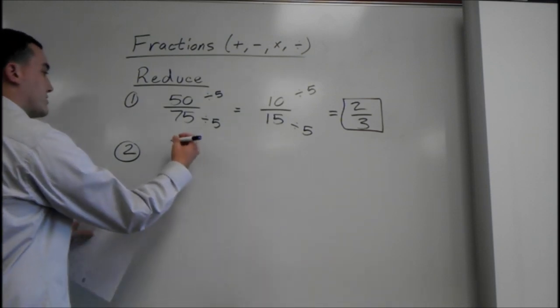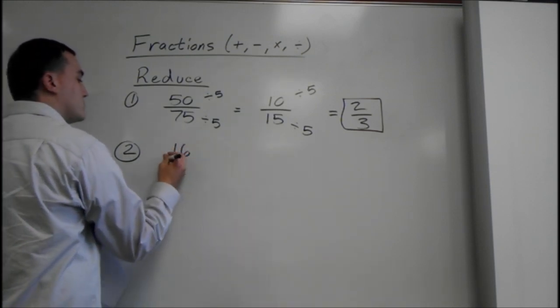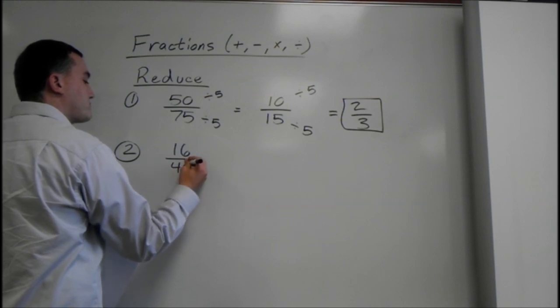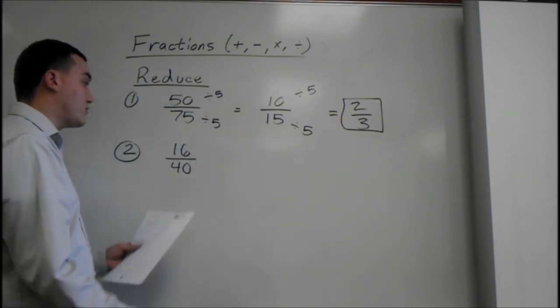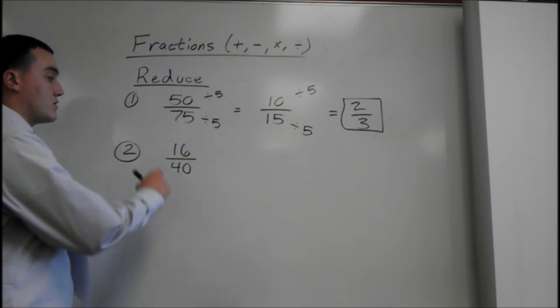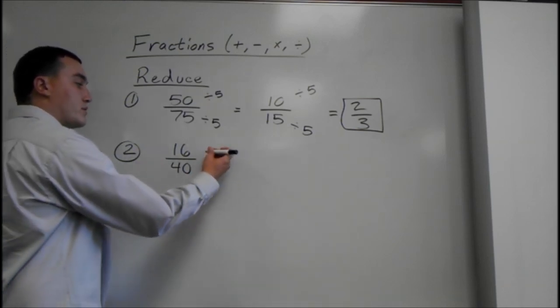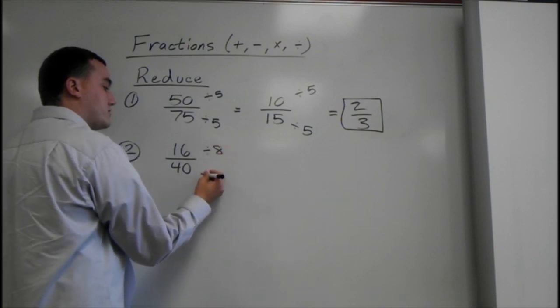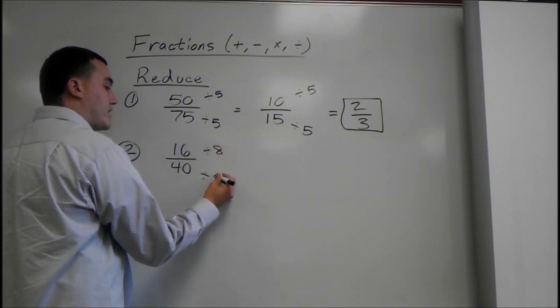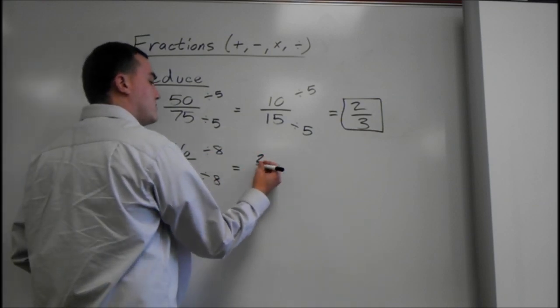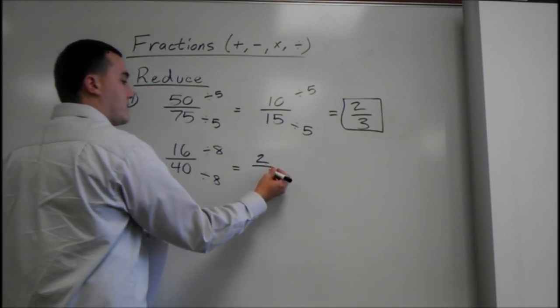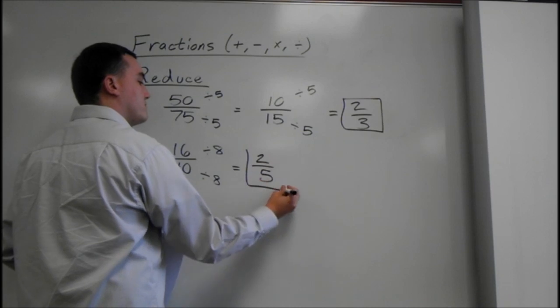Another example, we can say 16 over 40. Now, if you want to be a little bit quicker, you can think of the highest number that will go into both of these. So for 16 and 40, we would think 8. 8 does go into both of these. So we divide both of them by 8. 16 divided by 8 is 2. And 40 divided by 8 is 5. That would be it.